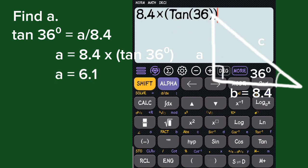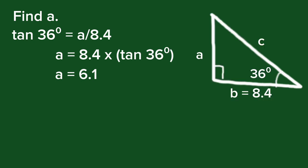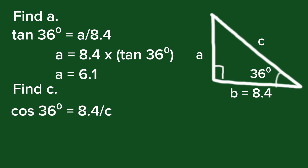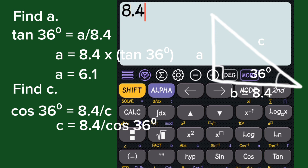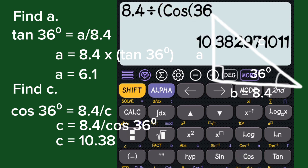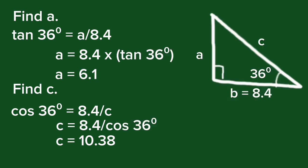The value for a is 6.1. Now let's find c, which is our hypotenuse. We can use either cosine or secant. Let's try cosine: cosine 36 degrees equals 8.4 over c, so c equals 8.4 over cosine 36 degrees. Using the calculator, this value is equal to 10.38. This type of problem contains a triangle with only one side given and an angle. To solve it, we can use any of the six trigonometric ratios, whichever is applicable.